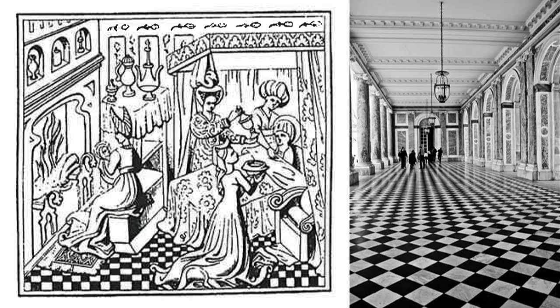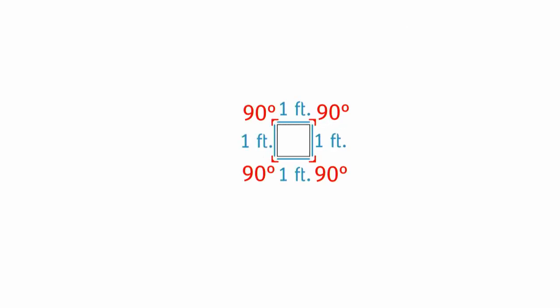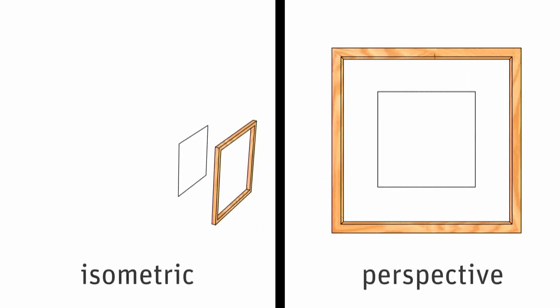This was a classic problem from perspective theory: how do you draw a checkered tiled floor in proper perspective? To understand why it's so hard, let's look at a single tile. What makes it square is four equal sides connected by four right angles. We'll bring in an Alberti's Veil and a simultaneous side view so we can see what the tile is doing in space and compare it to how it looks in perspective.